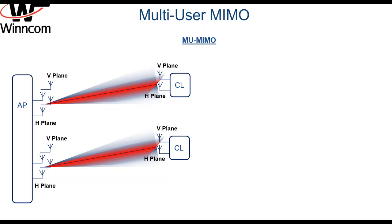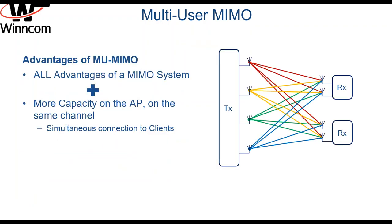This will cause good and bad spots on the coverage area. Comparing to a 2x2 MIMO point-to-multipoint system, this is the general kind of multipoint system we use today. You will definitely have more capacity to be delivered from the AP. However, there is a chance of losing connectivity to some of the clients. The antenna patterns and the way of utilizing MU-MIMO techniques must be considered when designing a network, especially for fixed wireless access. Looking at the advantages of a MU-MIMO system, we of course will have all the old advantages of a MIMO system, and on top of that, we will have more capacity on the AP on the same channel because of the simultaneous connections to the clients.